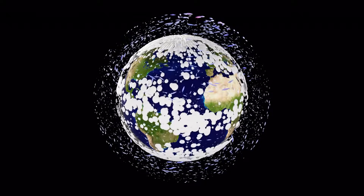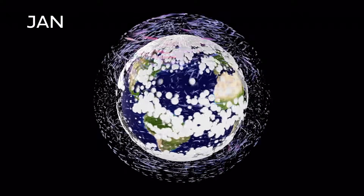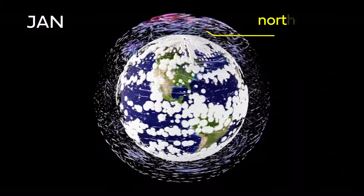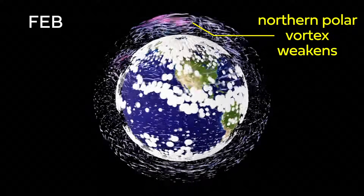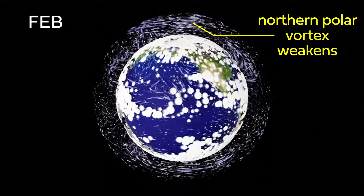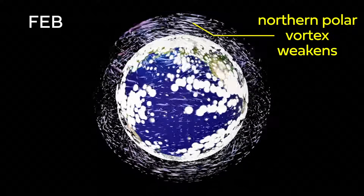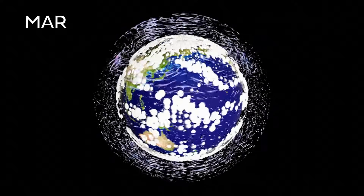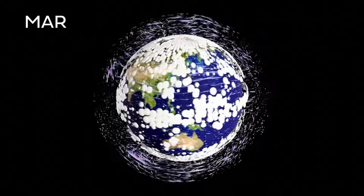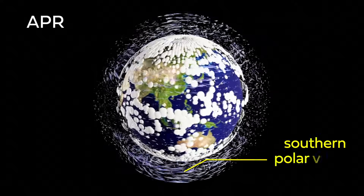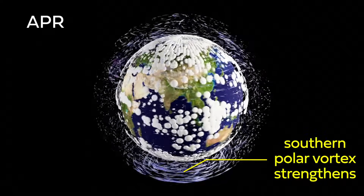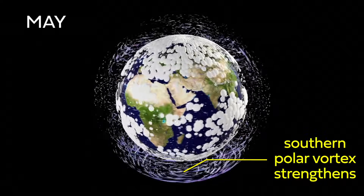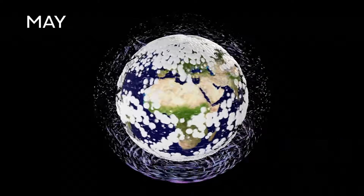Speeding up time, we can see the seasonal changes taking place. This is most clear in the stratosphere, where a planet-wide reversal of winds takes place as the seasons change, but other changes take place lower down in the atmosphere too. Look at how the jet streams migrate north and south as each hemisphere warms and cools, and how cloud cover shifts depending on the season.